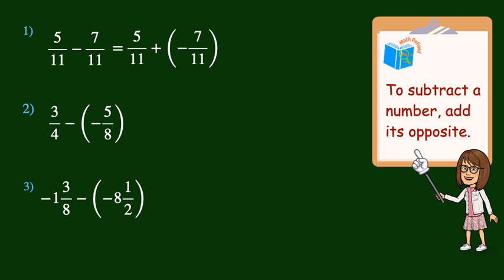Then from here, we just follow the rule for adding numbers with different signs. Since the denominators are the same, we subtract the numerators, 7 minus 5 is 2, and we keep the denominator of 11. But since negative 7 elevenths has the greater absolute value, the answer is negative 2 elevenths.